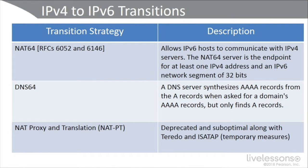Moving on, we have NAT64, covered by a couple of RFCs. This allows IPv6 hosts to communicate with IPv4 servers. The NAT64 server is the endpoint for at least one IPv4 address and an IPv6 network segment of 32 bits. The IPv6 client inserts the IPv4 address using those bits and sends its packets to the resulting address, and the NAT64 server generates a NAT mapping between IPv6 and IPv4.